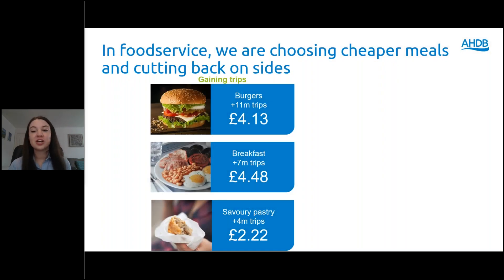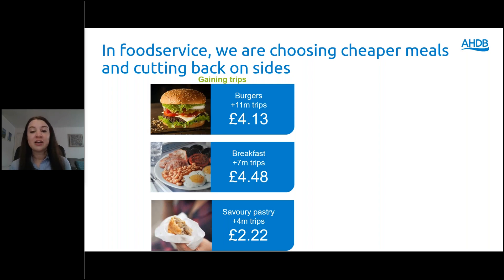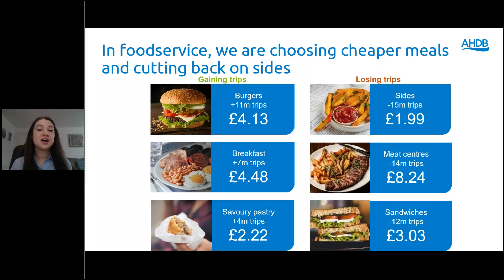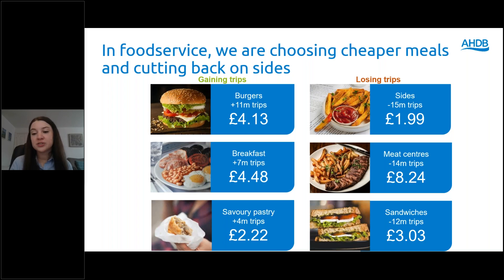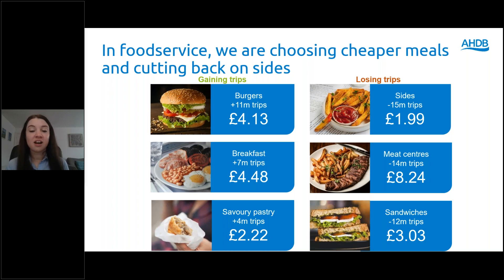Moving away from in-home consumption and looking at the food service market, we see people move towards cheaper meals. Burgers, breakfasts and savoury pastries have all seen growth in trips on last year and all have a relatively low price point, coming in at under £5 for the average meal. Side dishes have seen the biggest loss in food service — it's an easy way to make your meal cheaper by cutting the number of sides you have. Meat-centred meals such as steak and chips, roast dinners and shepherd's pie have also seen big losses as they tend to have a higher price point. We've also seen sandwiches in decline — despite being a relatively cheap option, this is where we're seeing the impact of people going to the office less and, when they do, taking in more lunchboxes.